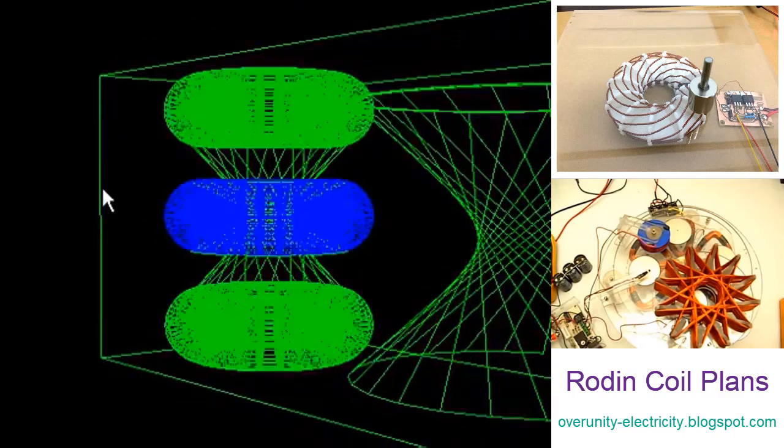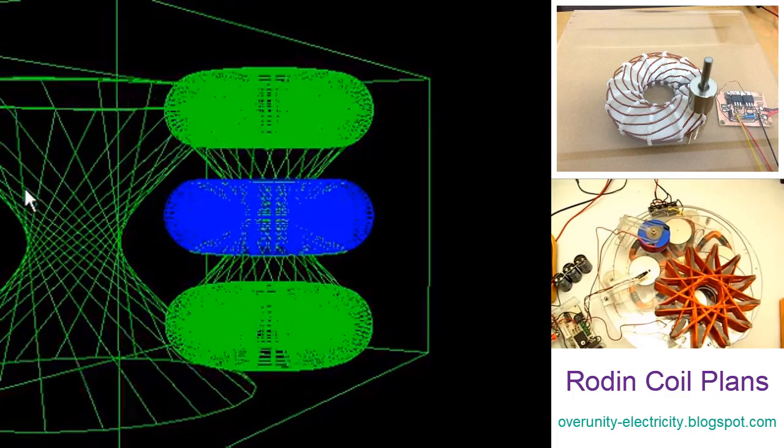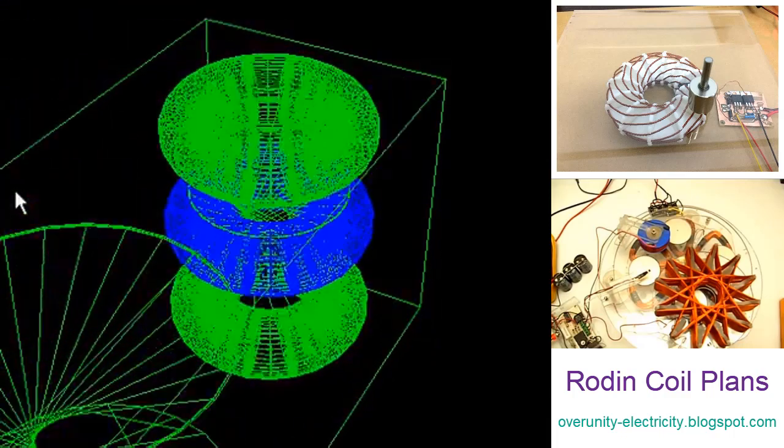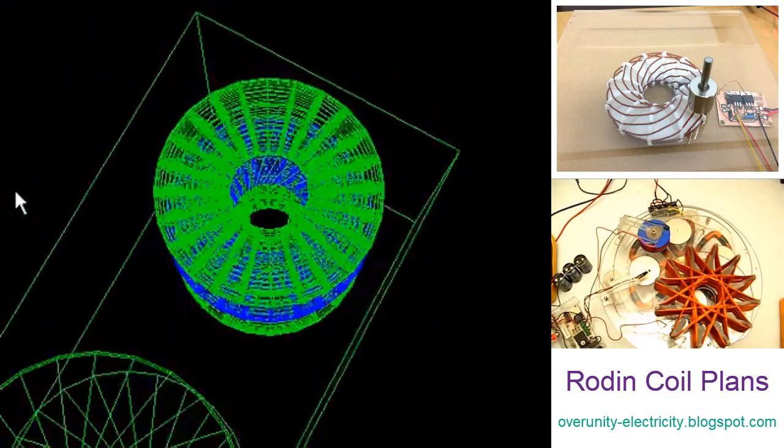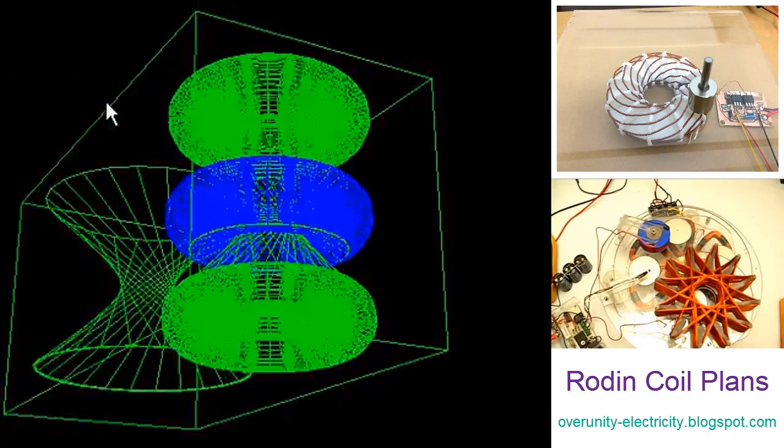Part 1: The Rodin coil plan. A. Theoretical foundations. The Rodin coil's plan is rooted in a multifaceted theoretical framework that encompasses mathematics, physics, and the ether field theory.